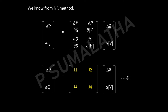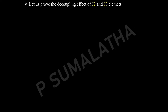According to the Fast Decoupled Load Flow technique, there is a decoupling effect between real power and voltage magnitude — so this J2 term becomes zero. Similarly, there is a decoupling effect between reactive power and phase angle — so J3 also becomes zero. Now we have to prove how these two matrices become zero. Let us prove the decoupling effect of J2 and J3 elements.